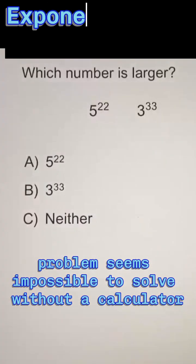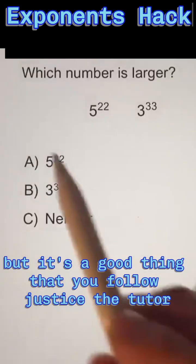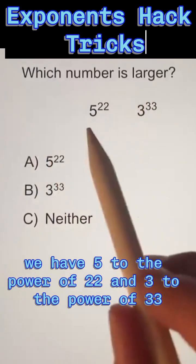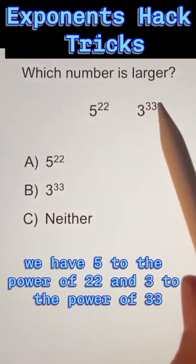This problem seems impossible to solve without a calculator, but it's a good thing that you follow Justice the Tudor. It says which number is larger? We have 5 to the power of 22 and 3 to the power of 33.